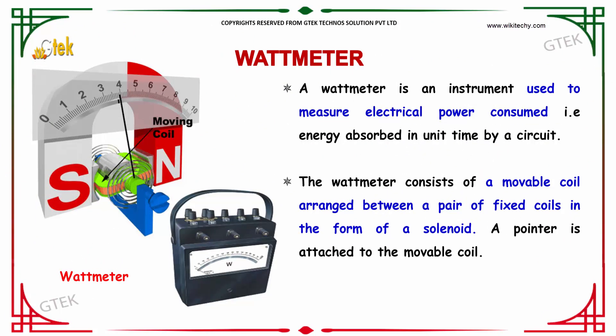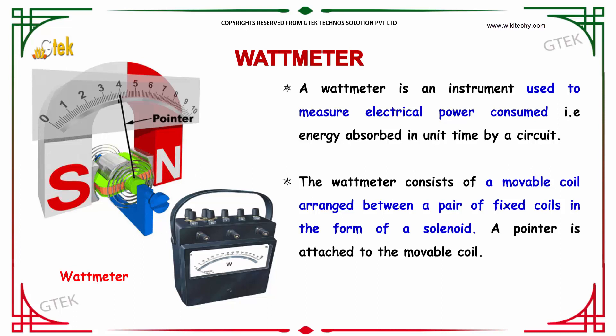A wattmeter is an instrument used to measure electrical power consumption. This is an instrument which I am trying to show here — this is a wattmeter. By definition, a wattmeter is an instrument used to measure electrical power consumed, that is, the energy absorbed in unit time by a circuit.